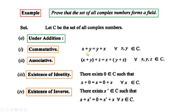If we take any two complex numbers, commutative law holds under addition. Similarly, associative law holds. Existence of identity: set C میں 0 ہے یعنی 0 + i·0; this 0 is the additive identity. اگر کوئی بھی complex number additive identity کے ساتھ add کریں تو وہی complex number دوبارہ ملتا ہے۔ Existence of inverse is also satisfied.